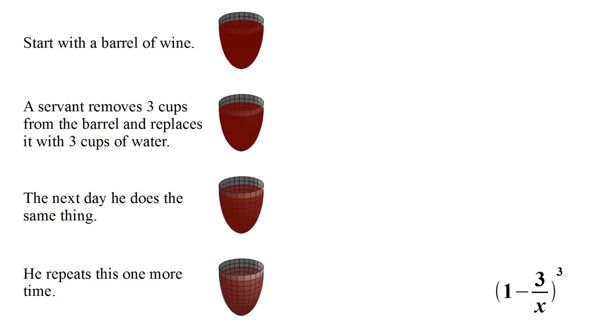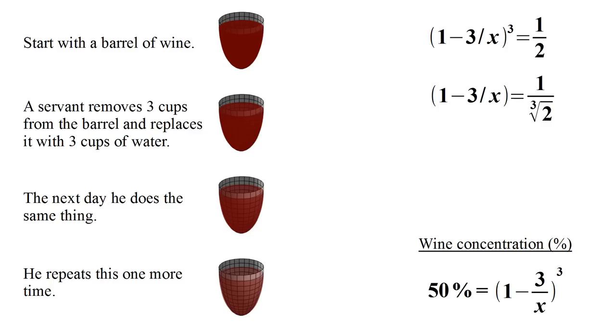In any case, we figured out the concentration of wine at the very end, and we are given this is equal to 50%. So we now have an algebra problem to solve. We have the quantity one minus three over X cubed equal to one half. We can take the cube root of each side, and then we can isolate and solve for the term X.